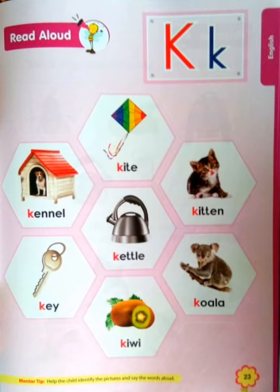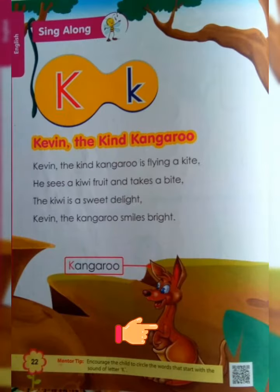Now a small song on letter K. K — Kevin the kind kangaroo. See, this is a kangaroo! Kevin the kind kangaroo is flying a kite.